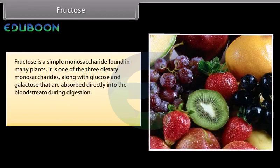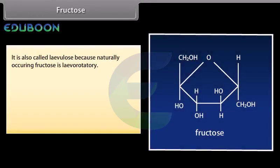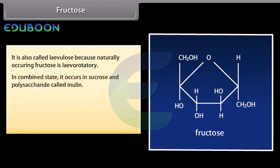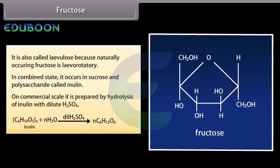Fructose is a simple monosaccharide found in many plants. It is one of the three dietary monosaccharides, along with glucose and galactose, that are absorbed directly into the bloodstream during digestion. It is found along with glucose in the juices of ripe fruits and in honey. It is also called levulose because naturally occurring fructose is levorotatory. In combined state, it occurs in sucrose and the polysaccharide called inulin. On commercial scale, it is prepared by hydrolysis of inulin with dilute H2SO4.